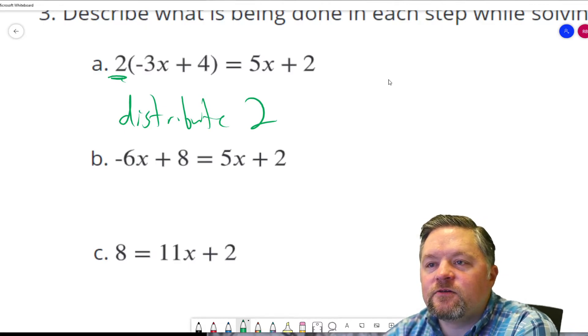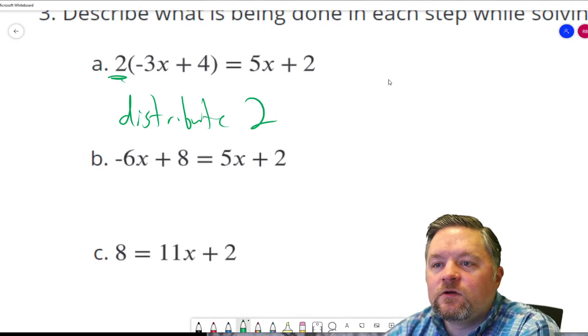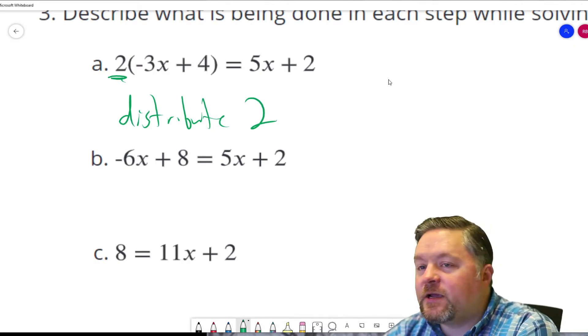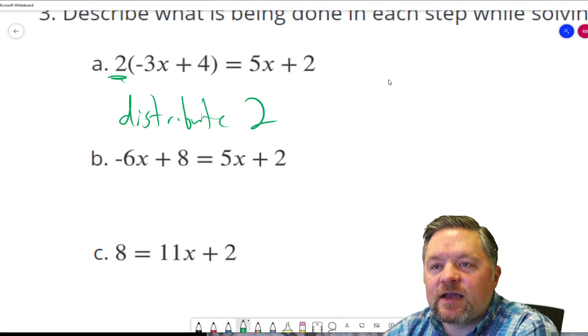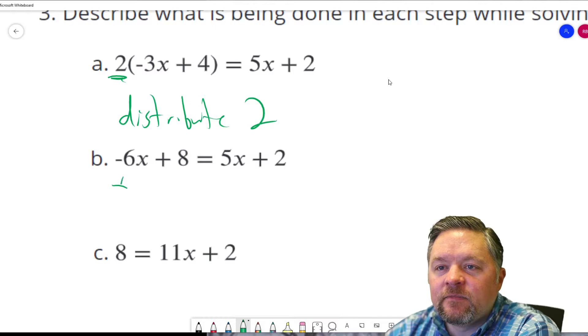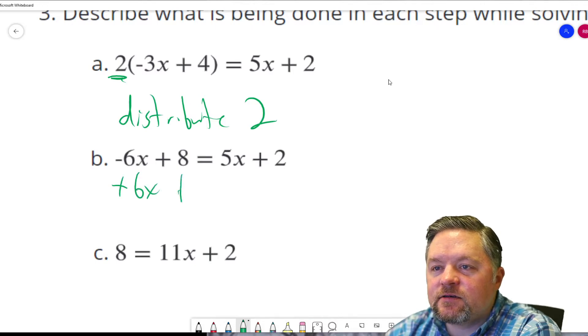Next, what do we do? From step B to step C, there's no more x's on the left. How do we get rid of negative 6x? We add 6x to both sides.